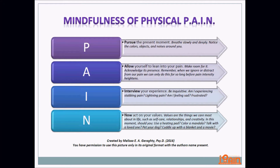The P is about pursuing the present moment. Breathe slowly and deeply. Notice the colors, objects, and noises around you. A is about allowing yourself to lean into your pain, make room for it, acknowledge its presence. Remember, when we ignore or distract from our pain, we can only do this for so long before pain intensity heightens.